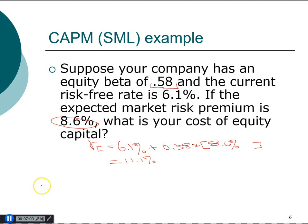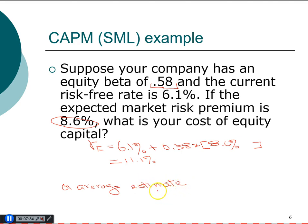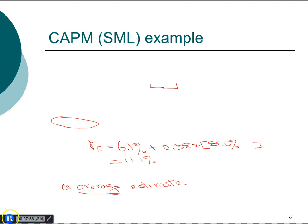The overall required return for this stock is also 11.1%. In practice, the two approaches will not always give the same answer, so you may need to choose one model or average the two estimates. If a company does not follow a constant growth model, you must use CAPM. If a company is not publicly traded, you cannot use CAPM and must use the dividend growth model.